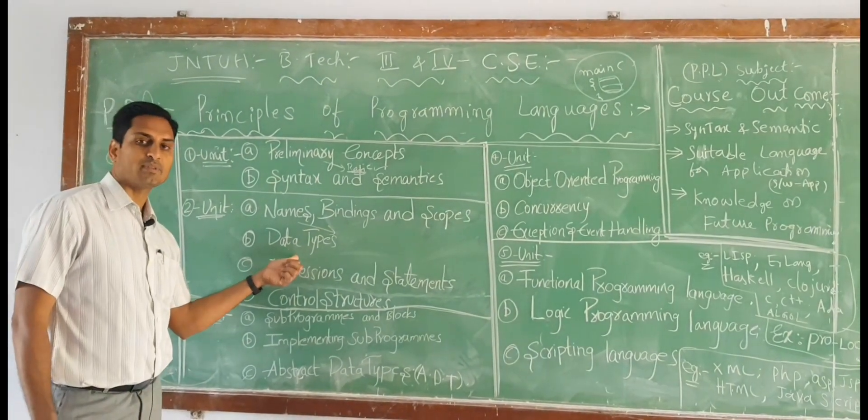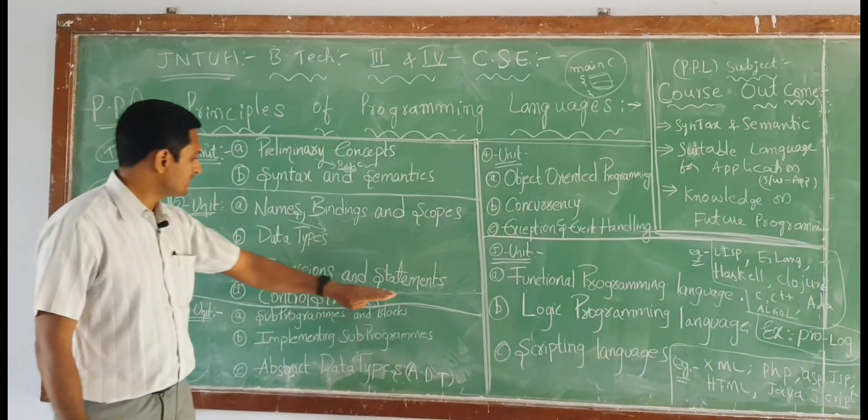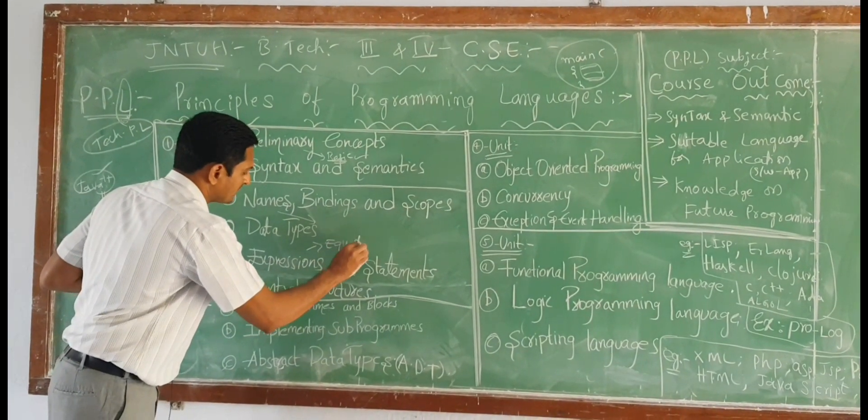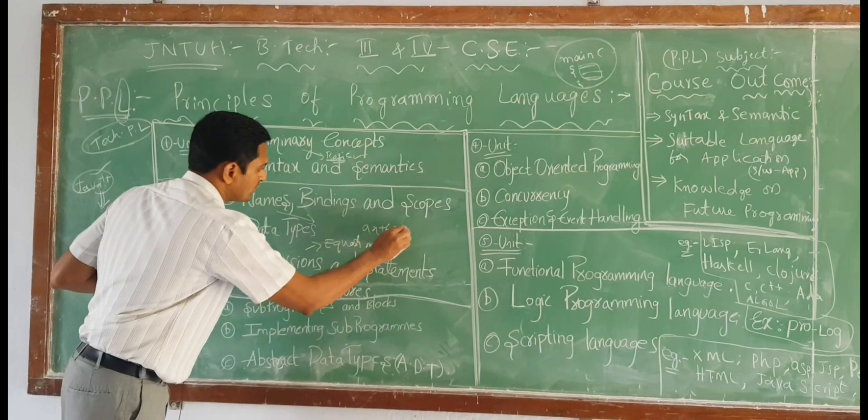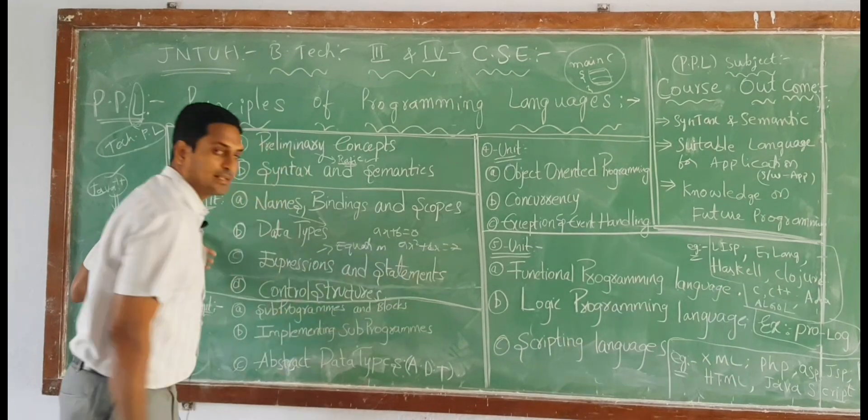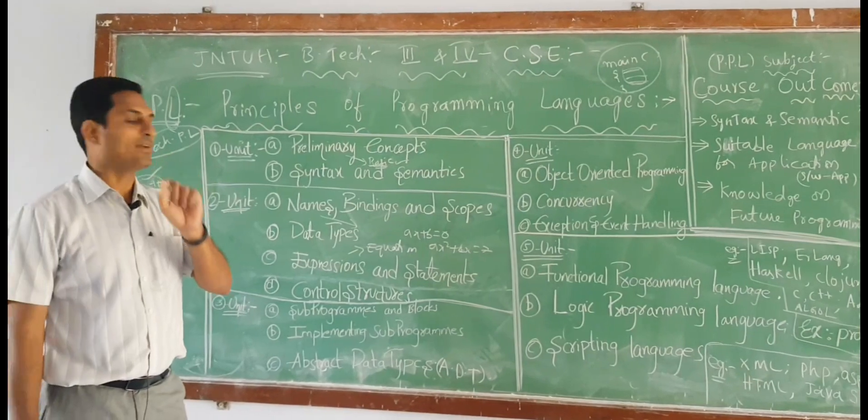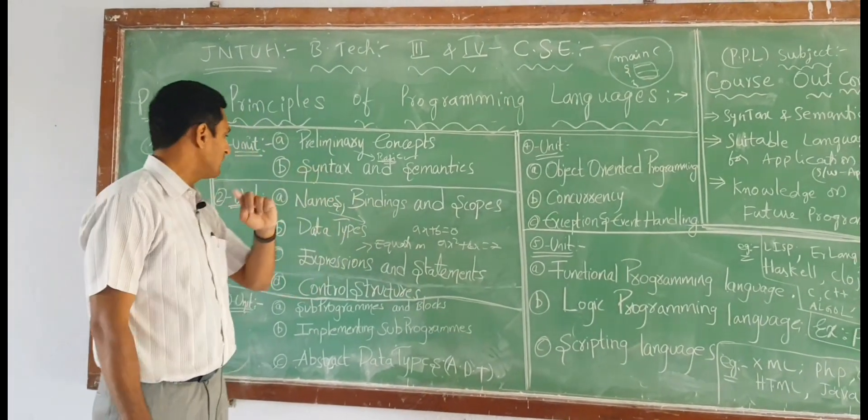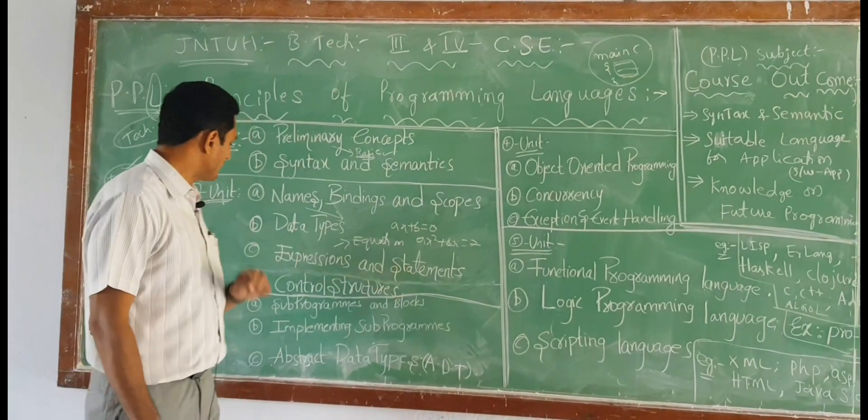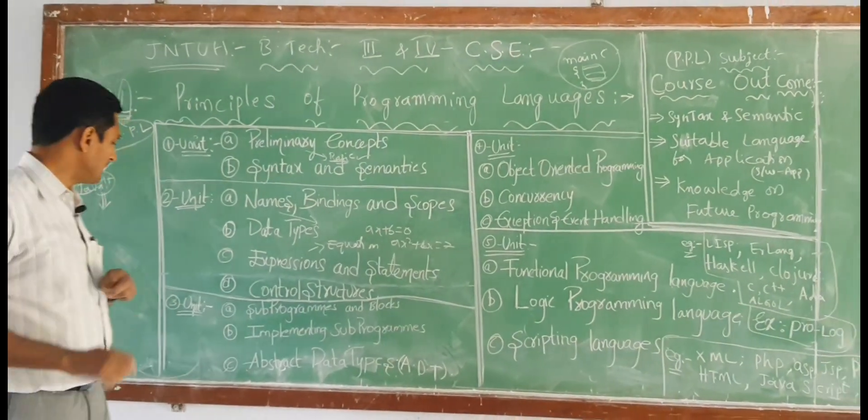Data types, how many data types are there, what are the basic things: int, float, char, string, just like that. Expressions and statements, expressions just like equations, a x plus b equal to 0, or a x square plus b x equal to some z. Every line in technical programming language is called a statement. Every statement ends with semicolon. Control structures, how we should control the flow, and compilers.